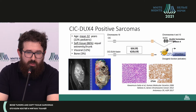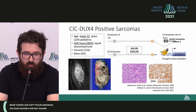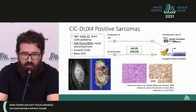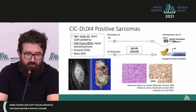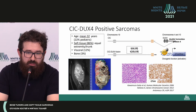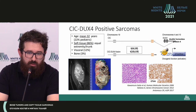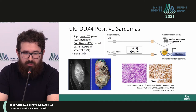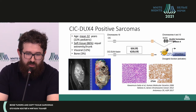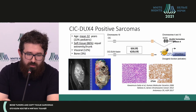The main part of my presentation is devoted to sarcomas with CIC-DUX4 rearrangement. They are different in terms of morphology, immune phenotype, and clinical picture. They occur at approximately the same mean age of 32 years, but 32% may occur in pediatric patients and children. The most frequent localizations are soft tissues of the limbs and trunk; 12% are visceral, and only 3% occur in bone.